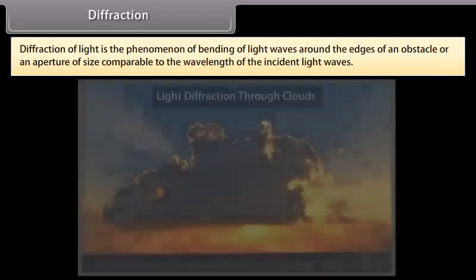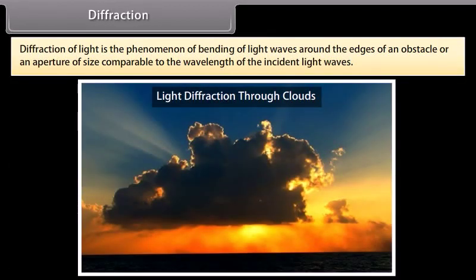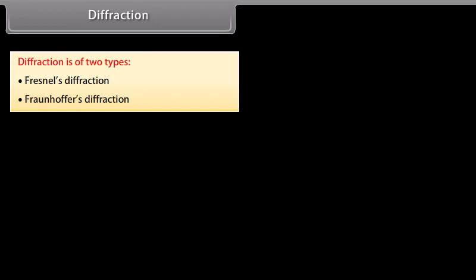Diffraction of light is the phenomenon of bending of light waves around the edges of an obstacle or an aperture of size comparable to the wavelength of the incident light waves. Diffraction is of two types: Fresnel's diffraction and Fraunhofer's diffraction.